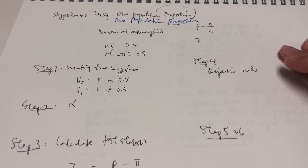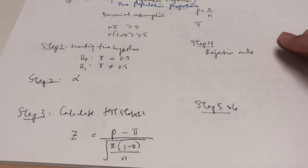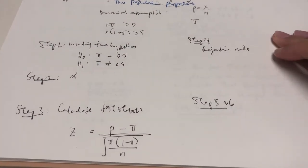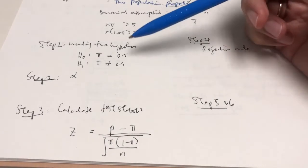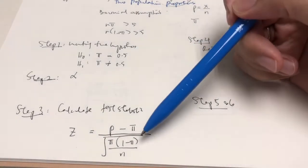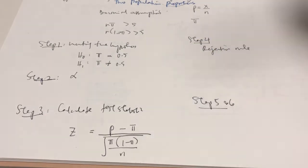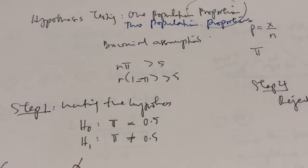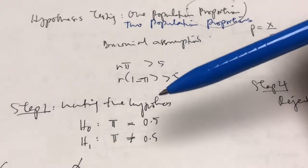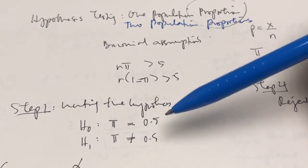As I mentioned before, all six steps apply. However, there are differences in writing the hypothesis in step one, as well as calculating the test statistic in step three. So, how do we write our hypothesis for a two population proportions test?